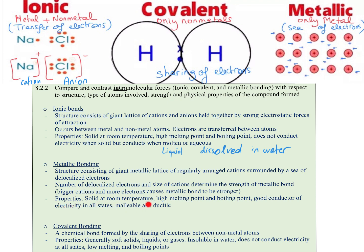Regarding metallic bonding properties: metals are solid at room temperature — 99% of metals are solids at room temperature, except for mercury, which is a liquid. They have high melting and boiling points, and are good conductors of electricity in all states. Metals are also malleable — we can hammer them into thin sheets like aluminum foil — and ductile, meaning we can pull them into thin wires like copper wires.